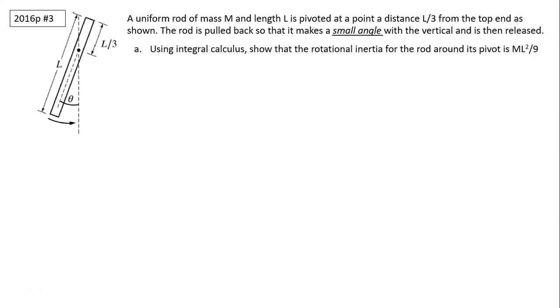A uniform rod of mass m and length l is pivoted at a point at distance l over 3 from the top end as shown. The rod is pulled back so that it makes a small angle with a vertical and then released. Use integral calculus. Show that rotational inertia for the rod around its pivot which is l over 3 is ml squared over 9.